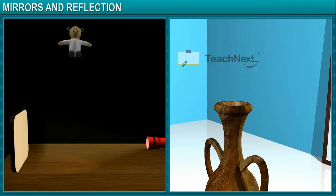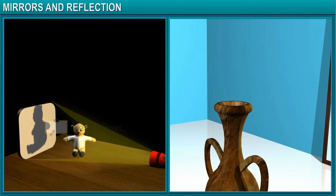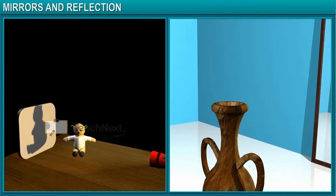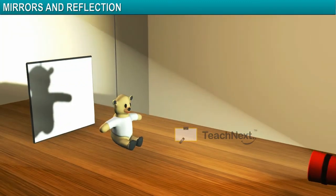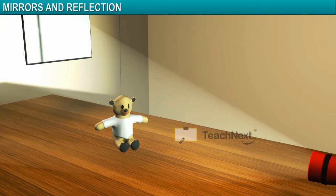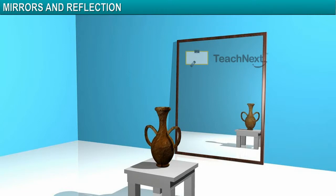Let's now examine the conditions for the formation of a shadow. We know that a shadow is formed when an opaque object blocks the path of light rays. Whereas an image is formed when light rays from an object are reflected by a smooth, shiny surface such as a mirror. Shadows cannot be seen without screens, but the same is not true for a mirror image — an image in a mirror can be seen without a screen.